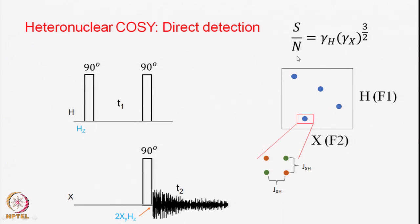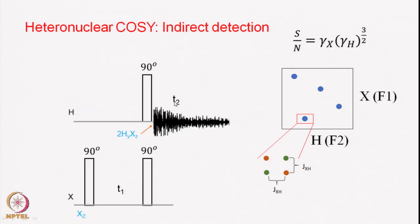Now let us look at some signal-to-noise considerations. Typically, the signal-to-noise in any experiment is dependent on the gyromagnetic ratios of the excited nucleus and the detected nucleus. It is proportional directly to the gamma of the excited nucleus, and with regard to the detected nucleus, it is proportional to the 3/2 power of its gyromagnetic ratio. Therefore in this case the signal-to-noise ratio will be proportional to γH × γX^(3/2). Now let us look at an alternative sequence — indirect detection, where the X magnetization is recorded in an indirect manner.